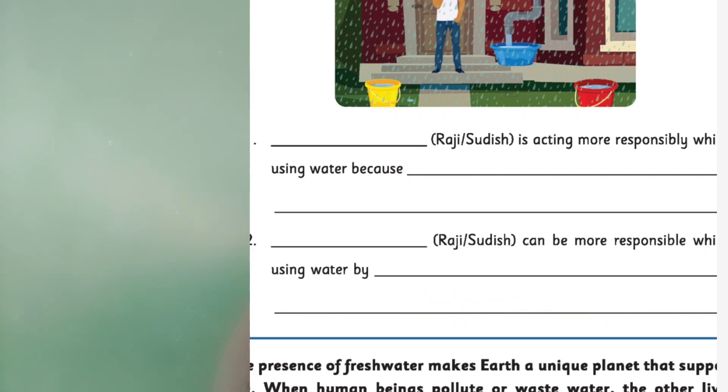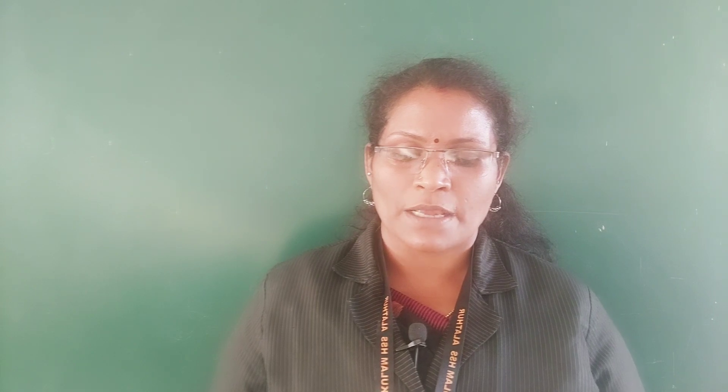The presence of fresh water makes Earth a unique planet that supports life. When human beings pollute or waste water, the other living things that also depend on it are affected. Hence, it is important to always be responsible while using water. Even small efforts from each of us can help to save water from being wasted. I know, my dear children, you will do that — you have to practice this.